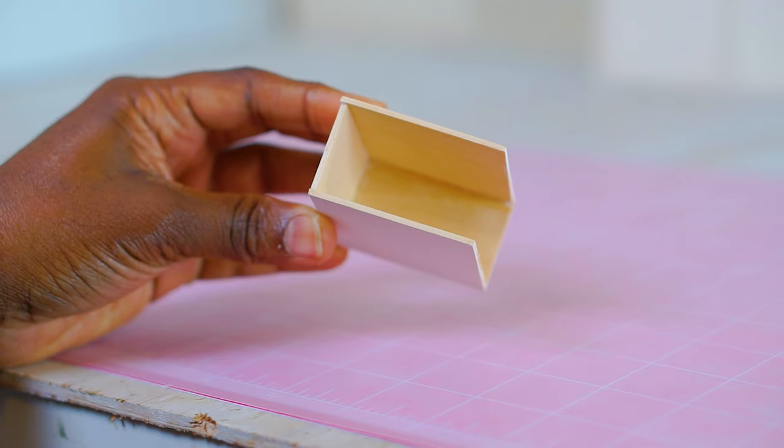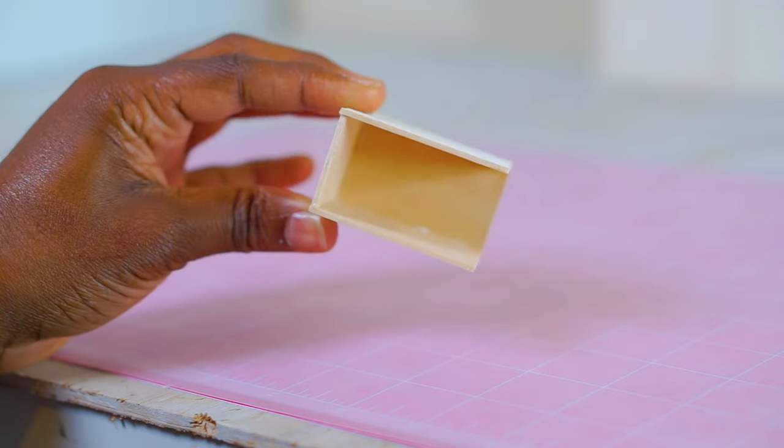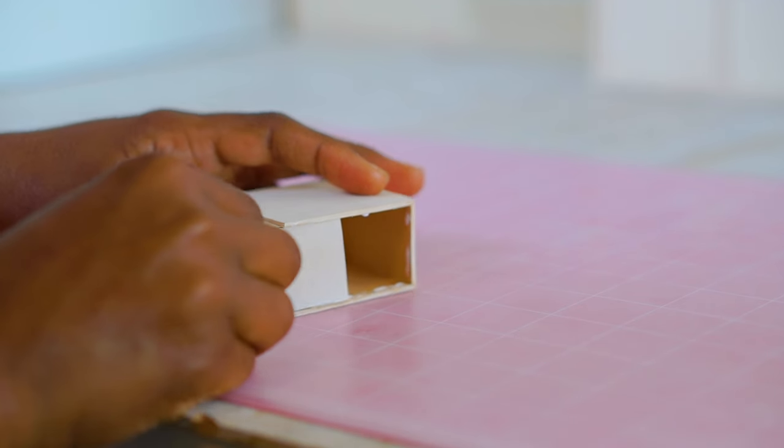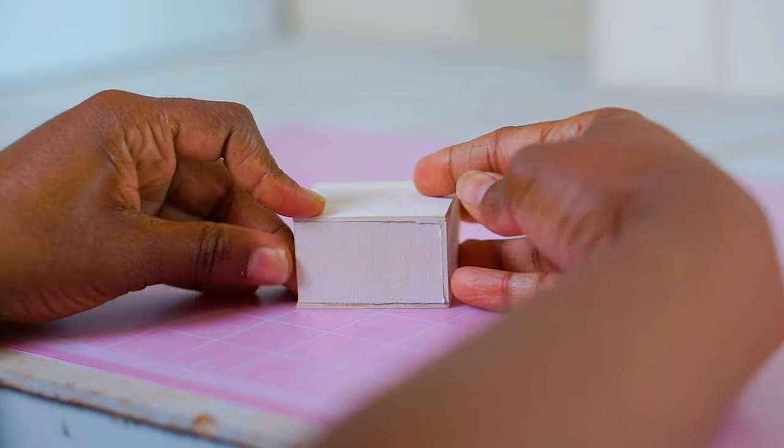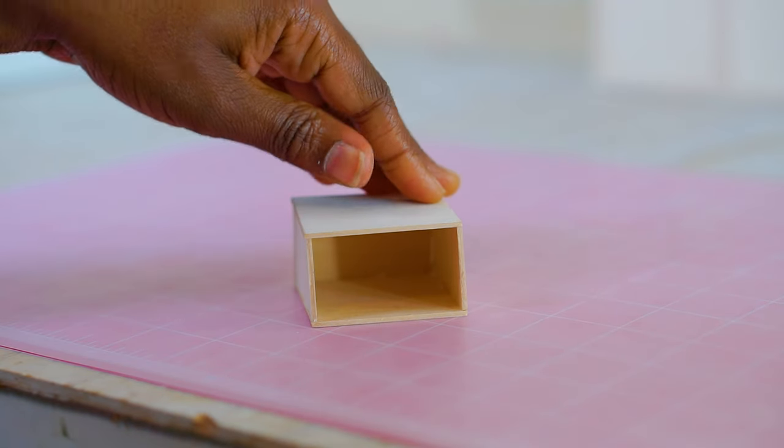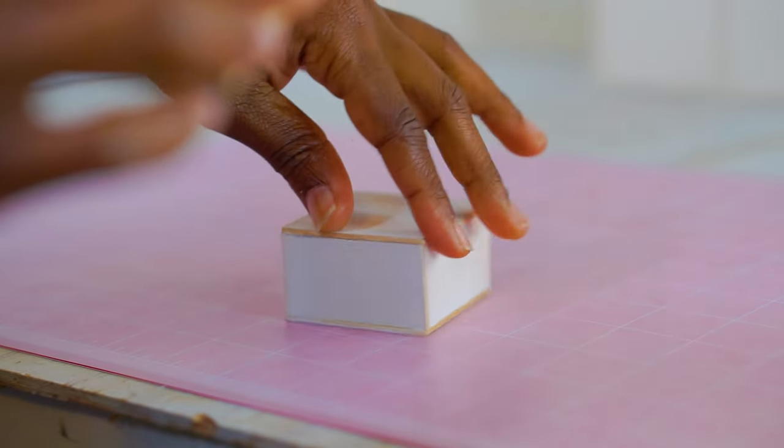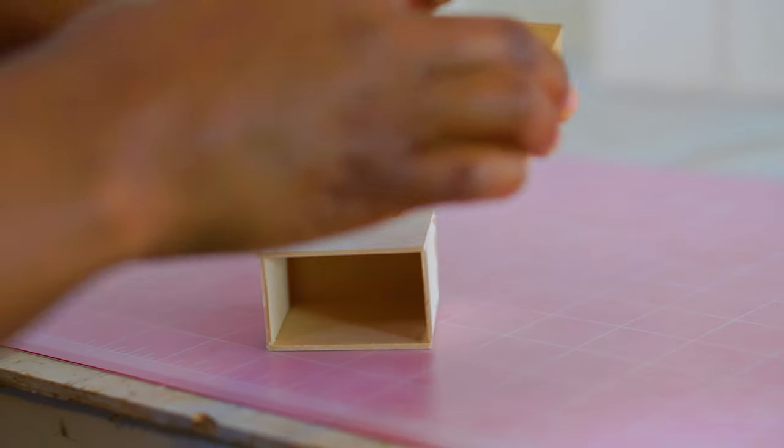This glue that I'm using is Aileen's tacky glue, and this is my favorite glue to use for pretty much everything I do in these builds. This is the turbo tacky glue which is a little bit thicker and it holds all of the wood pieces together until I can get something heavy to smush them down.